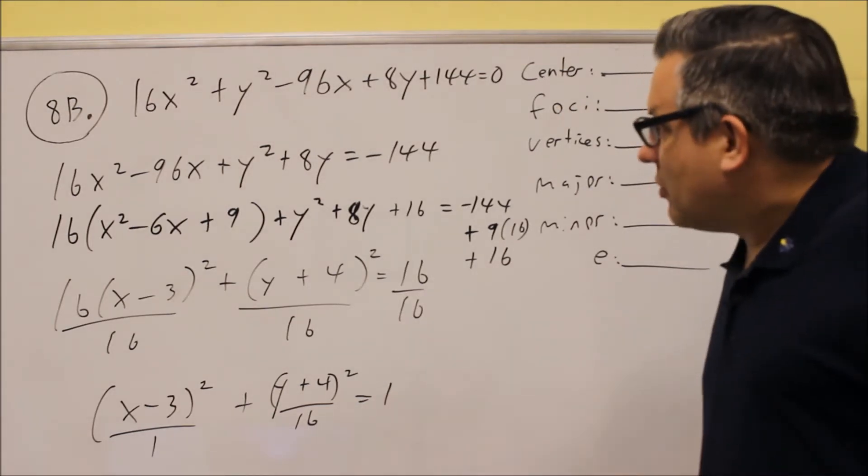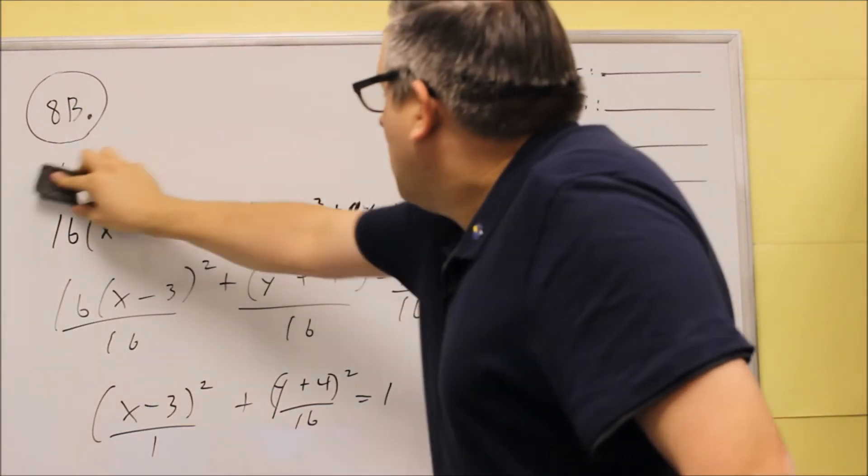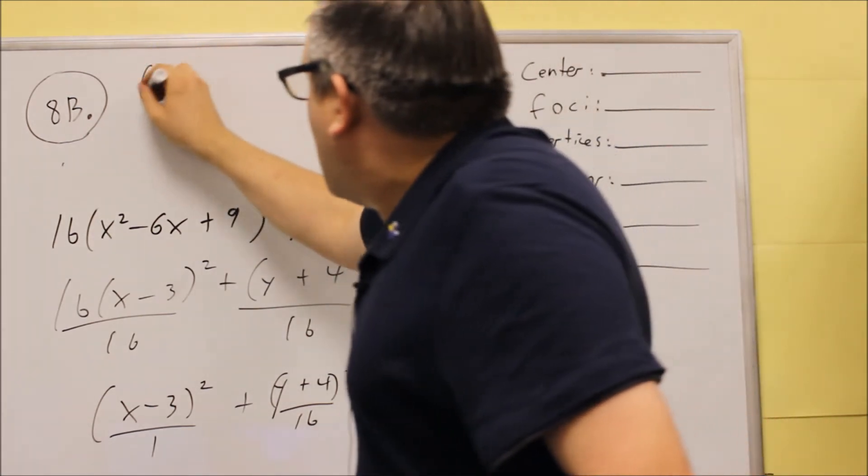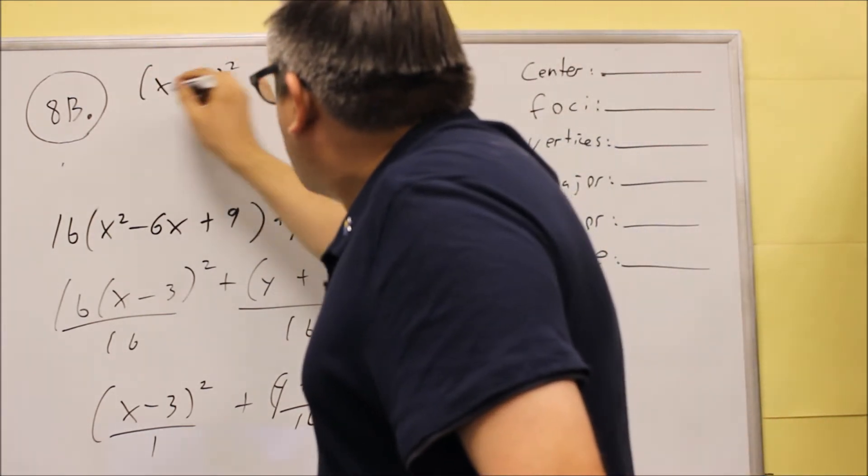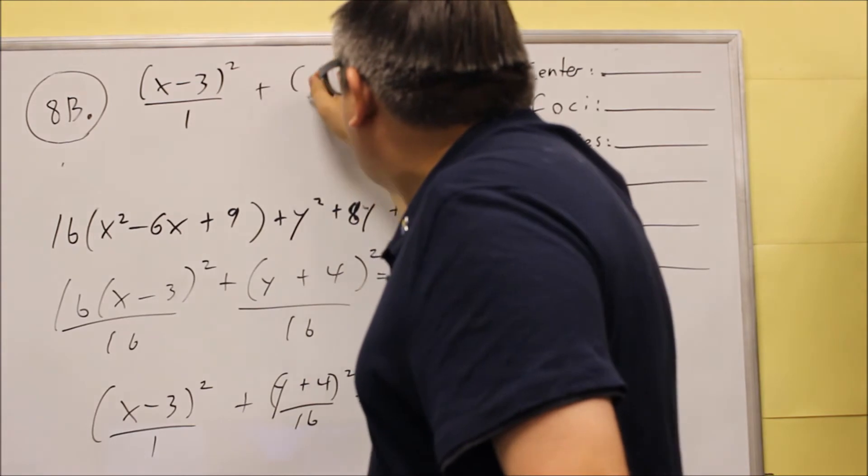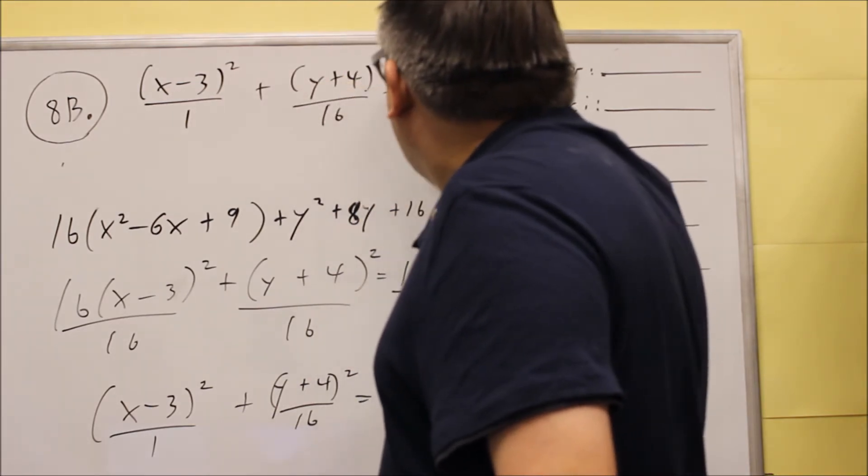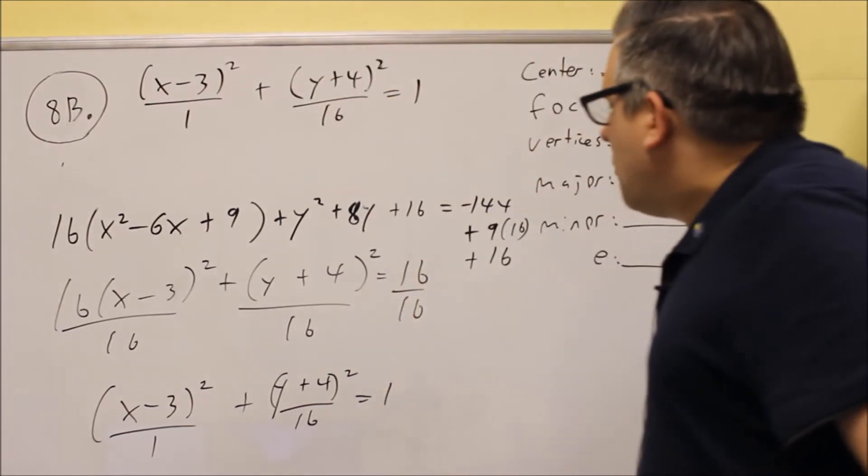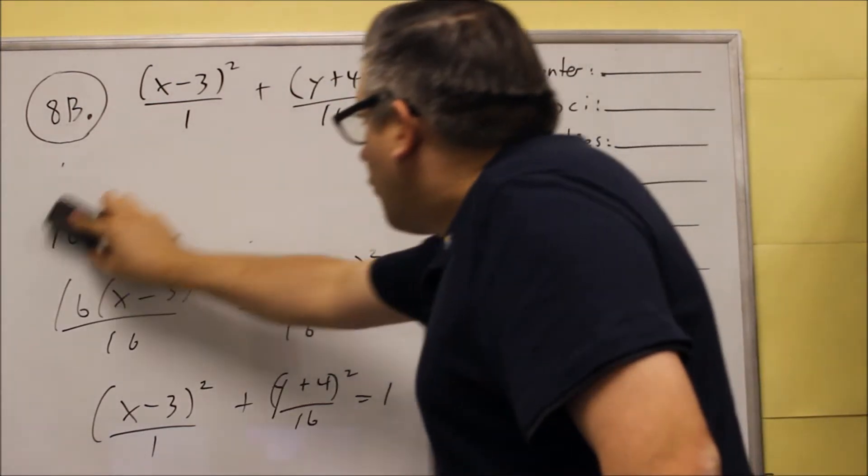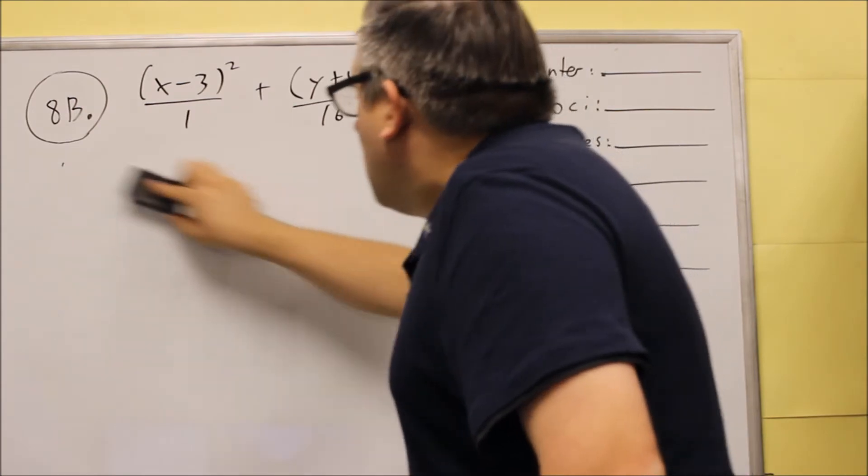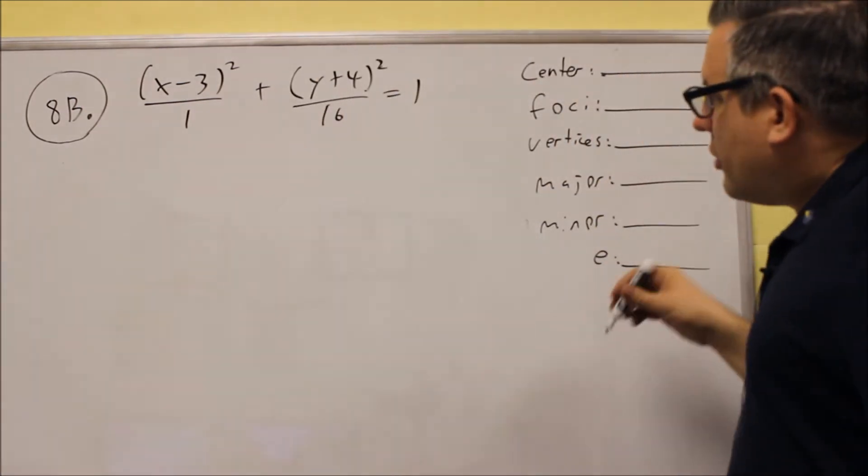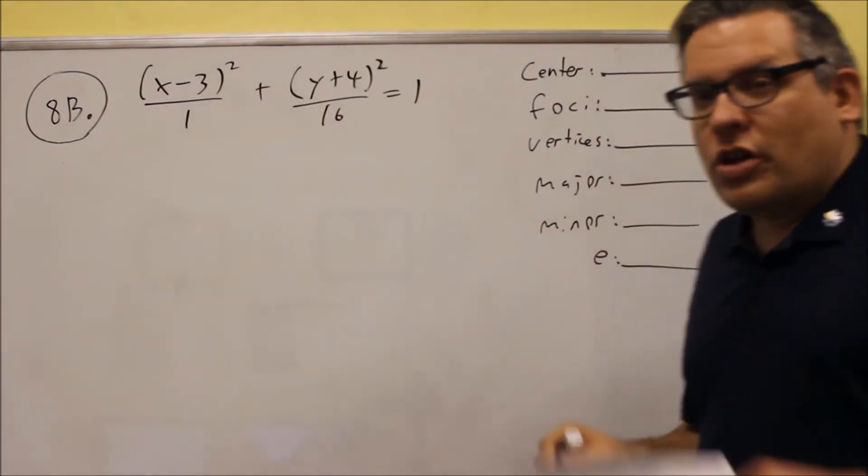So this, let me erase this now so we can get some room, and we'll put this now on top. X minus 3 squared over 1 plus Y plus 4 squared over 16 equals 1. So this is the equation I'm now going to work with for filling out all this information here. So now we just start the problem with it in that form.